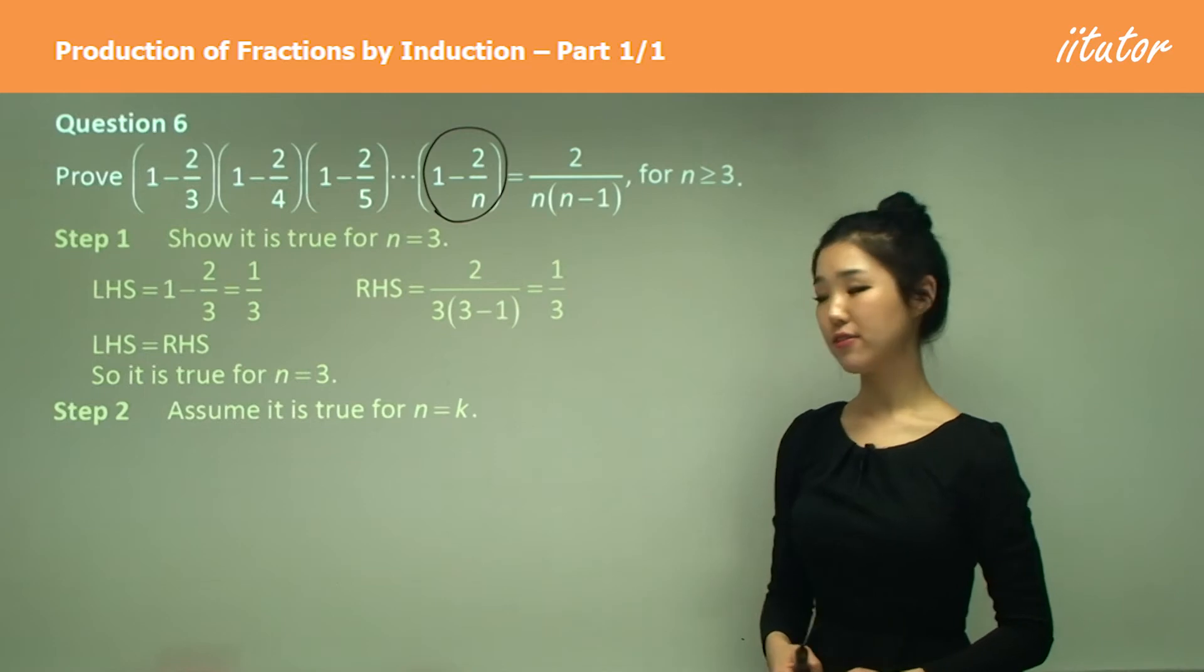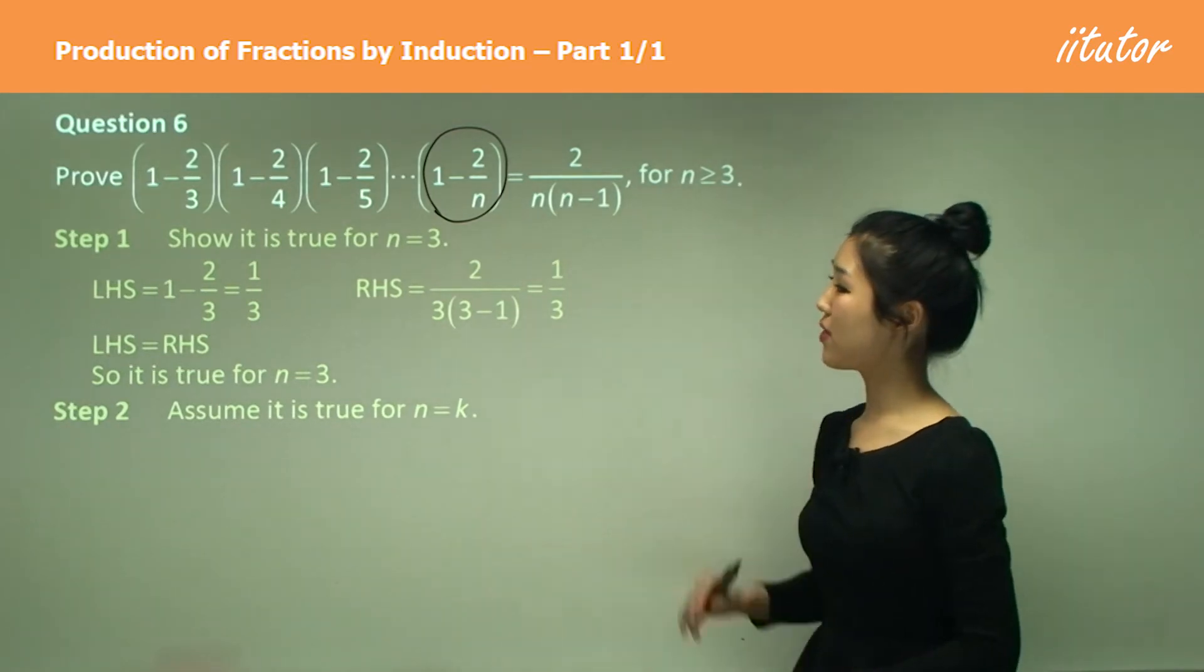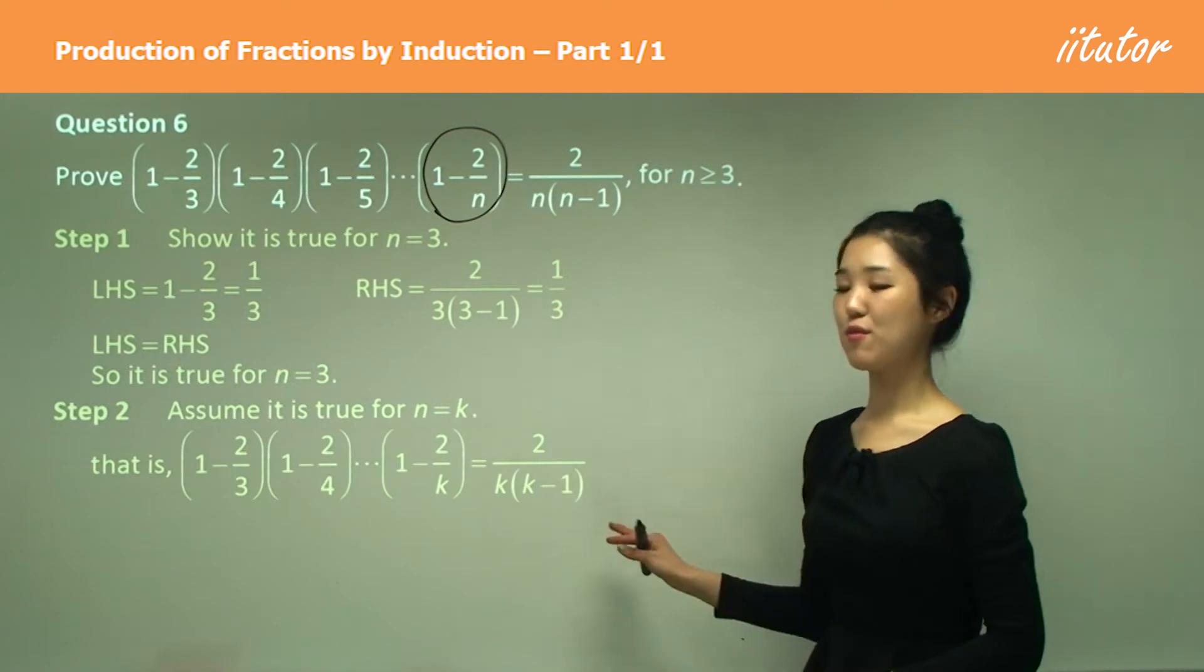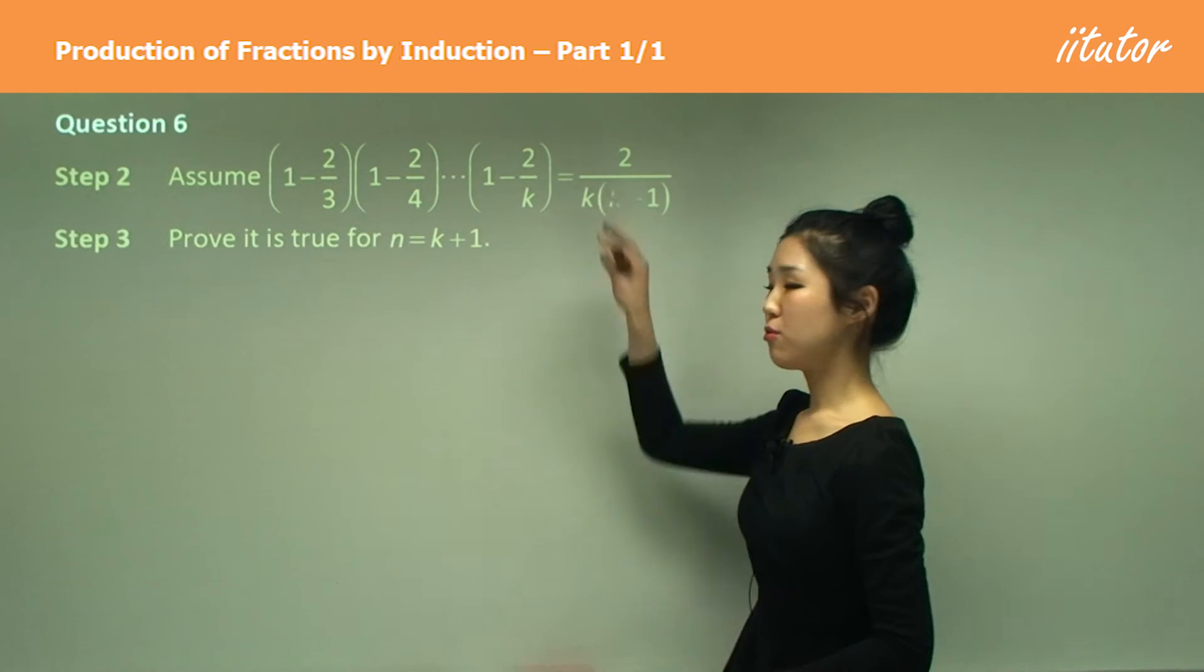Now we'll do step two for our assumption. Assume it's true for n equals k. So make all the n's equal to k and that will be our assumption. And then step three, this is our assumption which we'll use soon.